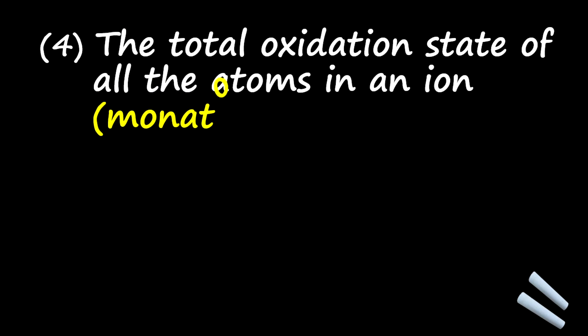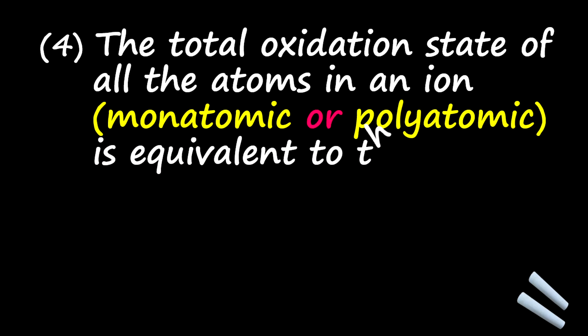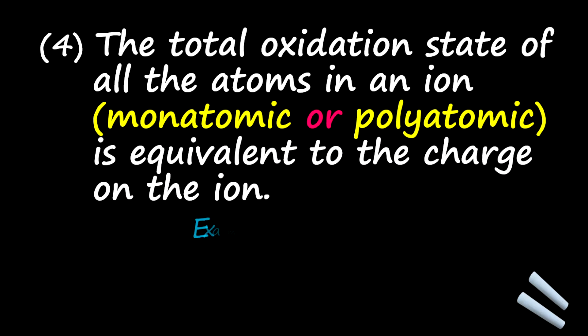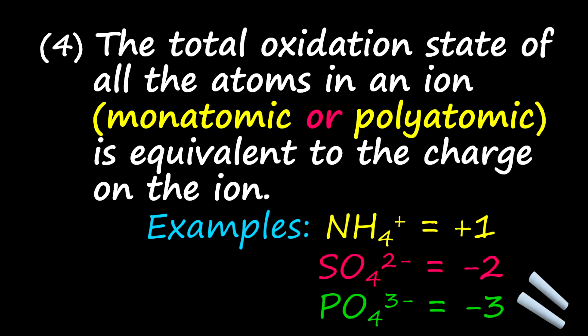Next rule. In this rule, it says the total oxidation state of all the atoms in an ion, either monatomic or polyatomic ion is equivalent to the charge on that ion. Now, taking for example the ammonium ion, which is NH4+, that means the total charge on this ion is positive one. For the sulfate ion, negative two. For the phosphate ion, negative three.